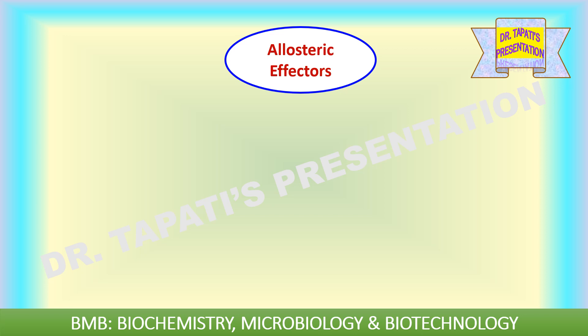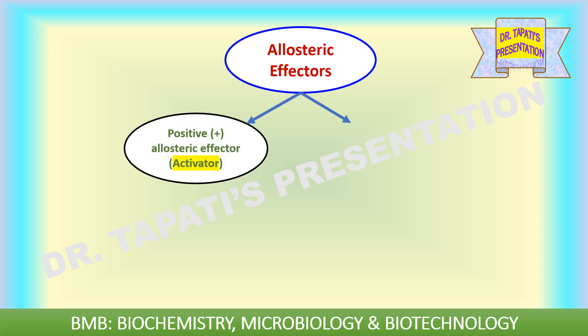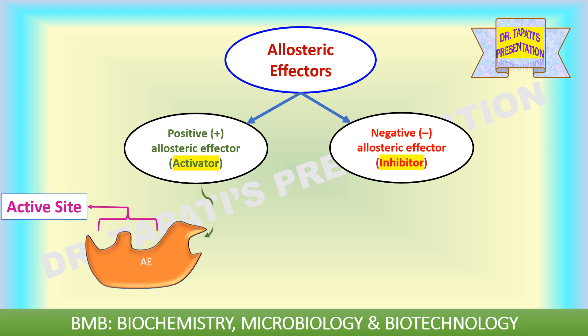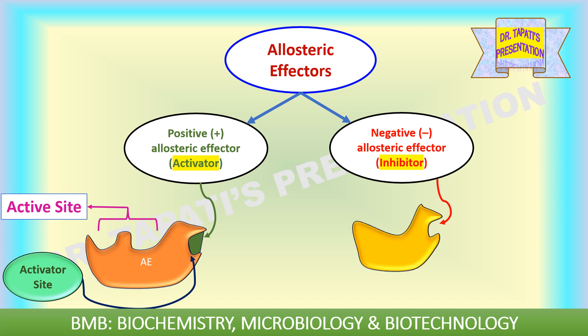There are two types of allosteric effectors: positive allosteric effector or activator, and negative allosteric effector or inhibitor. Enzyme activity is increased when an activator binds at the allosteric site, whereas an inhibitor inhibits the enzyme activity. The non-covalent reversible binding of the effector molecule at the allosteric site brings about a conformational change in the active site of the enzyme, leading to inhibition or activation of the catalytic activity.